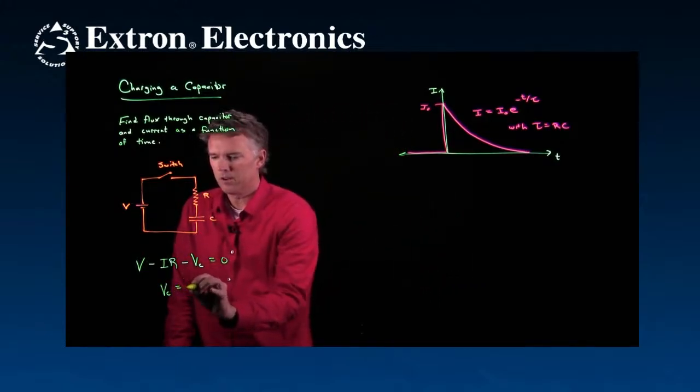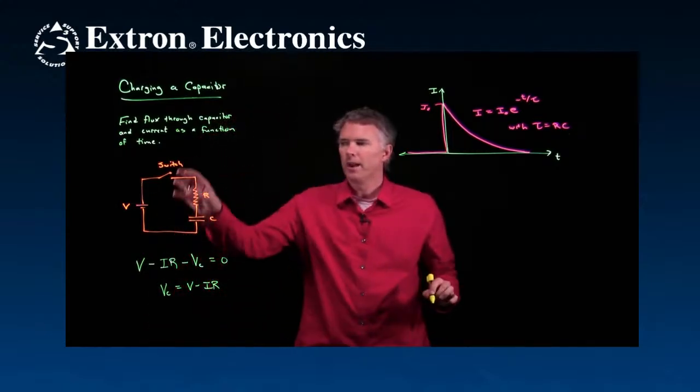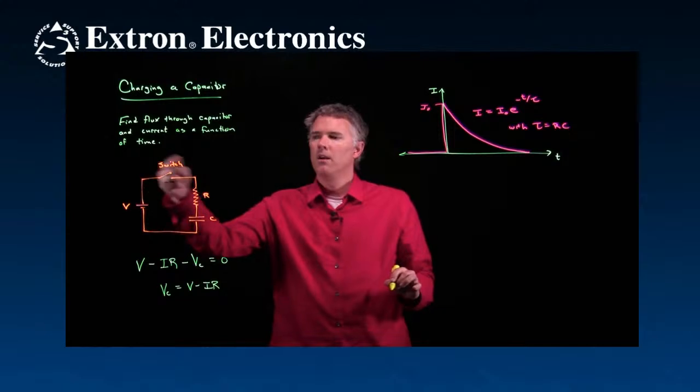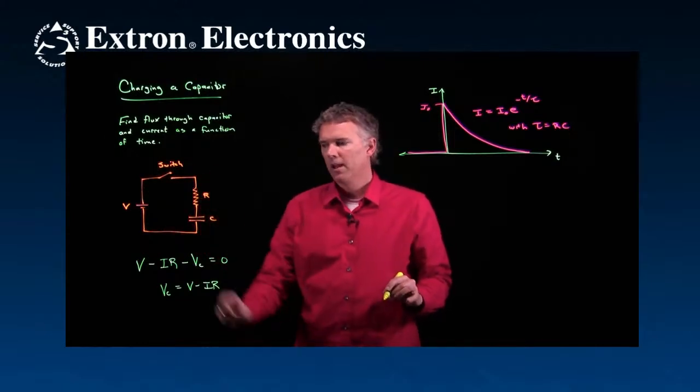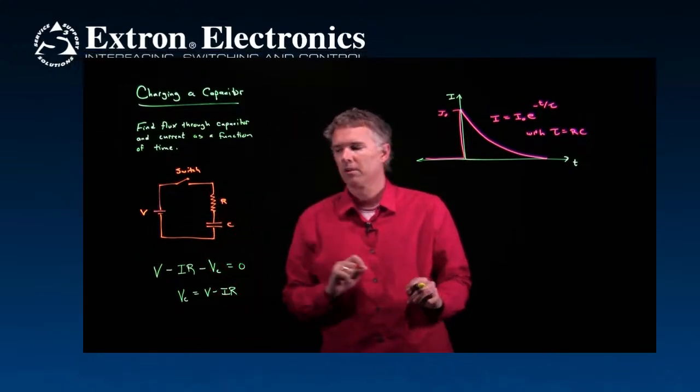VC is therefore just V minus IR. It's whatever voltage you have here minus the current through the resistor. That's what's left over to charge up the capacitor. I should say that's the voltage across the capacitor.